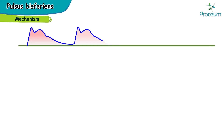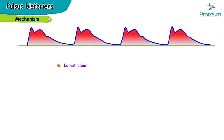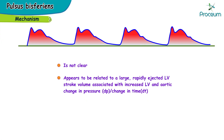The mechanism of pulsus bisferiens is not very clear. It appears to be related to a large, rapidly ejected left ventricular stroke volume associated with increased left ventricular and aortic dP/dt — that is, the rate of rise of left ventricular pressure. That concludes our video on pulsus bisferiens.